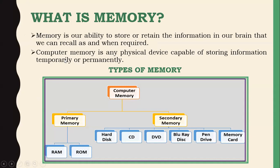Memory is the ability to store data or keep information permanently. Computer memory refers to physical memory where we can store data either temporarily or permanently. Primary memory is also called temporary memory. It is internal memory — directly inside the CPU — and includes RAM, ROM, registers, and cache memory. Secondary memory is permanent, external, or backup memory, used for permanently storing data on devices attached externally to the CPU.